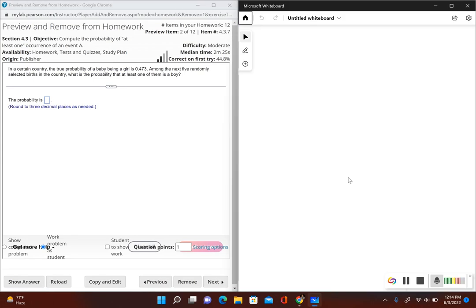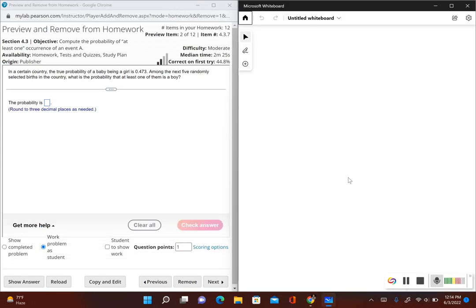Okay. So that is probability of at least one boy. This is equal to one minus the probability of no boys. So we're going to use the rule for complementary events.